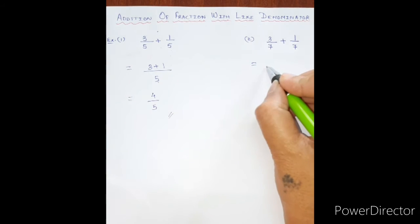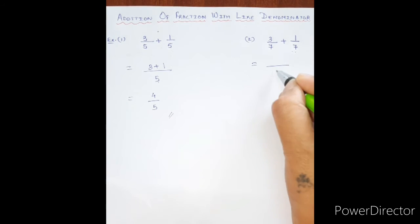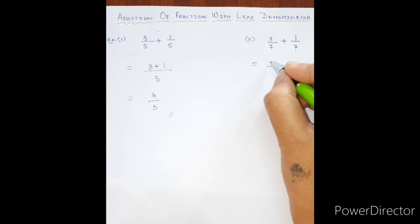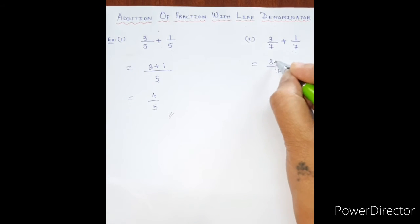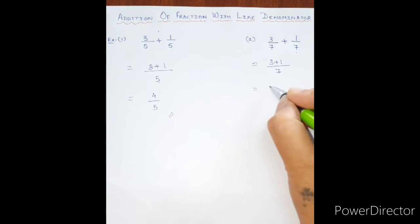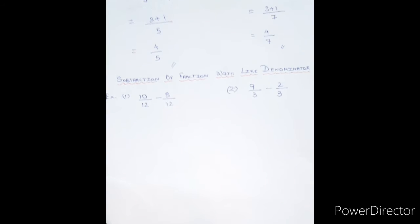Let's go to the second example. We look at the denominator — the denominator is the same, so write it only one time and just add the numerators. 3 plus 1 is 4 upon 7. So this is my answer.